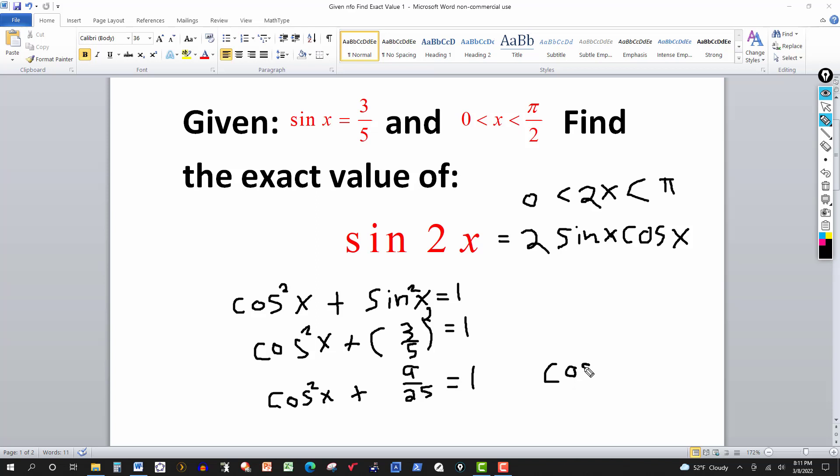So cosine squared of x will equal to one. Bring this over to this side, so that'll be 1 minus 9 over 25. And 1 is the same thing as 25 over 25, so we can get the same denominator there. 25 minus 9 is 16 over 25.